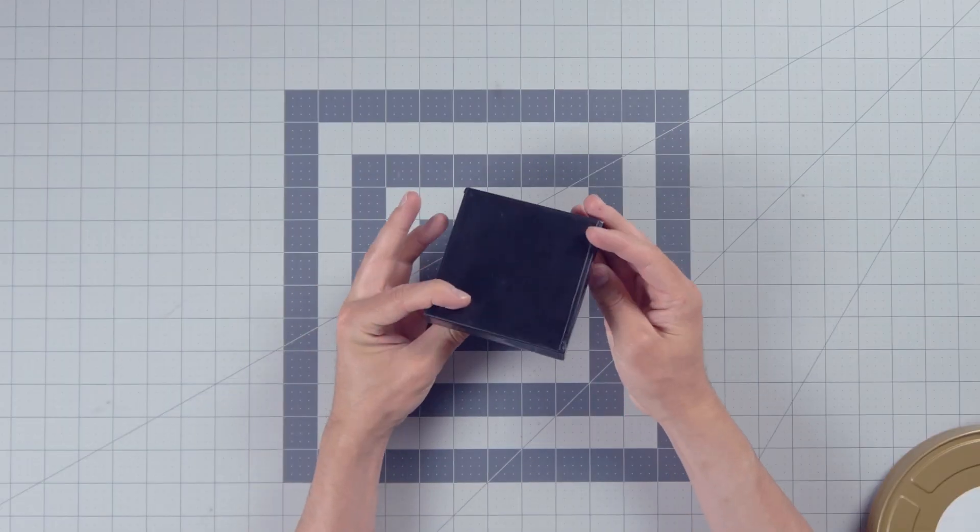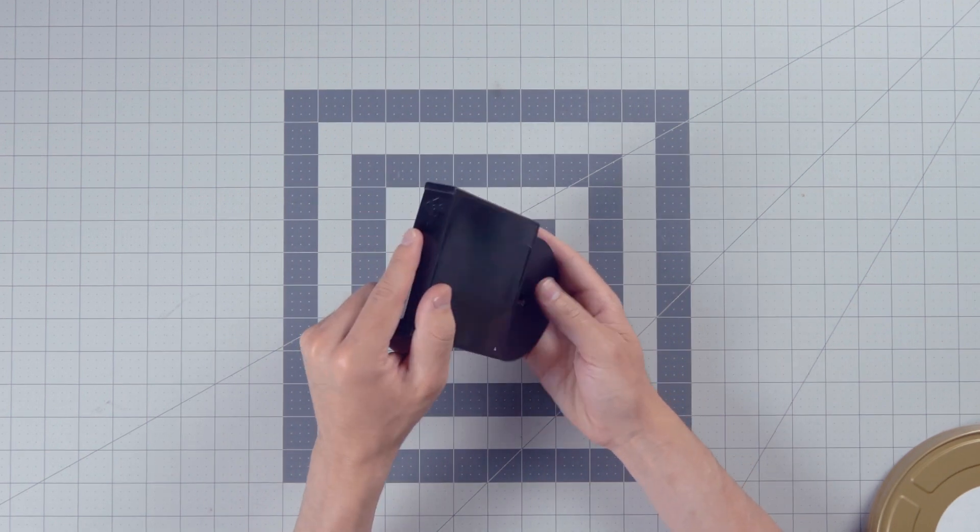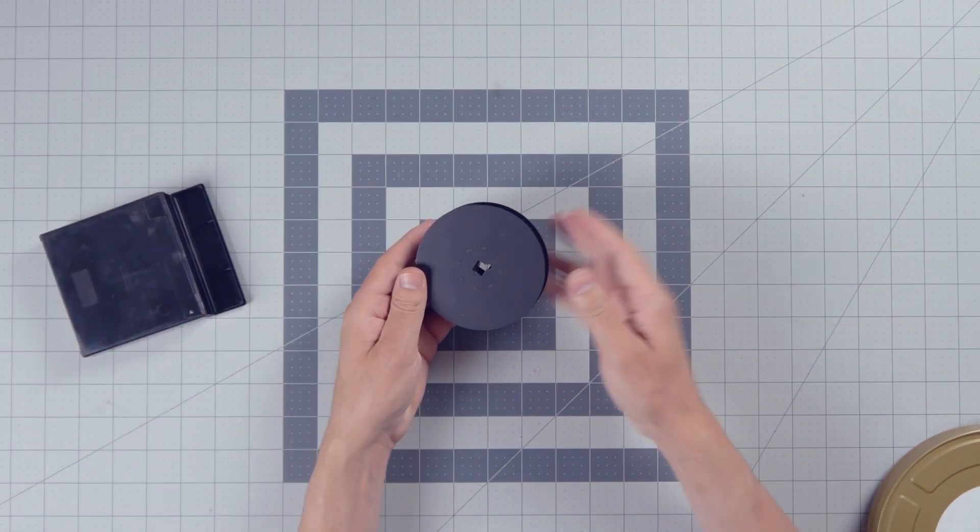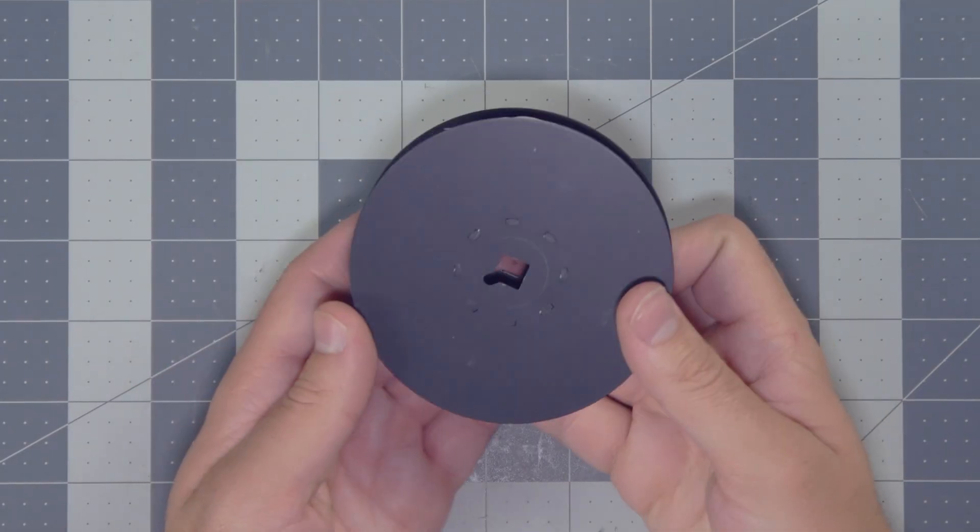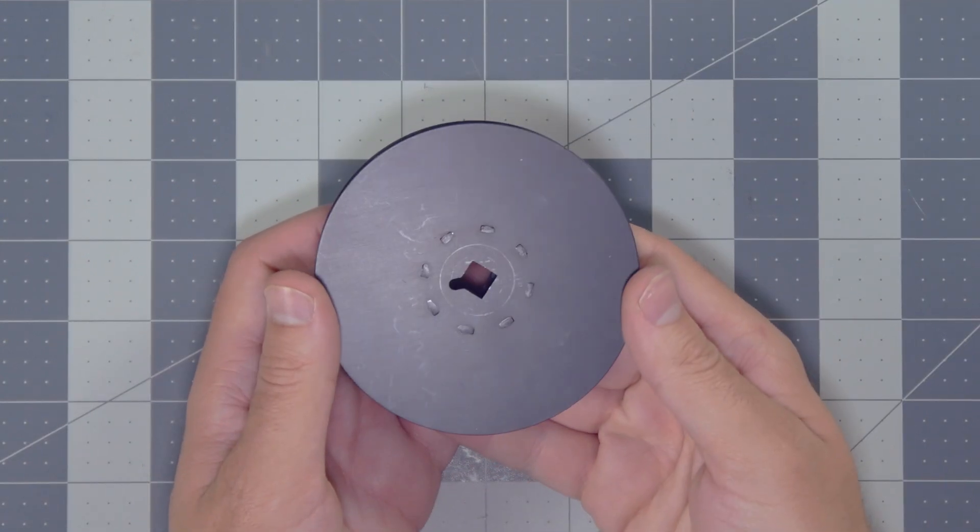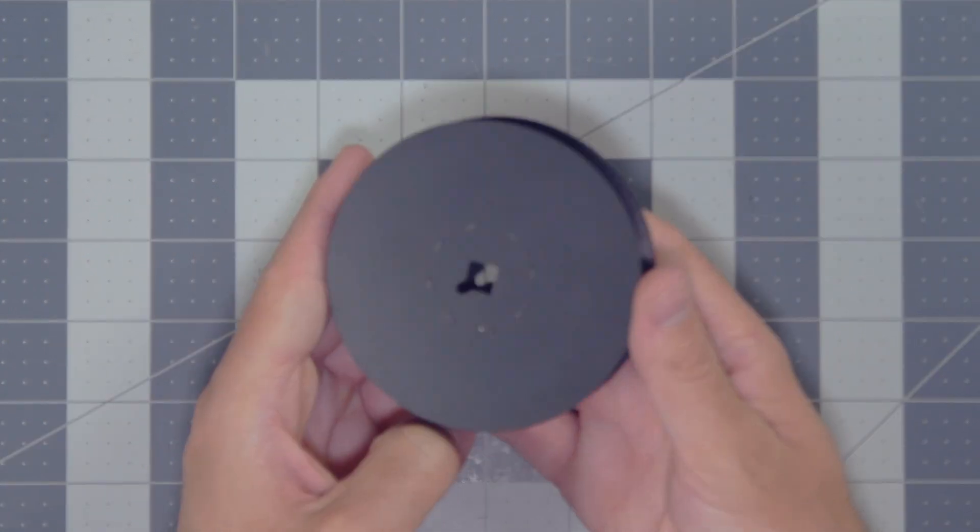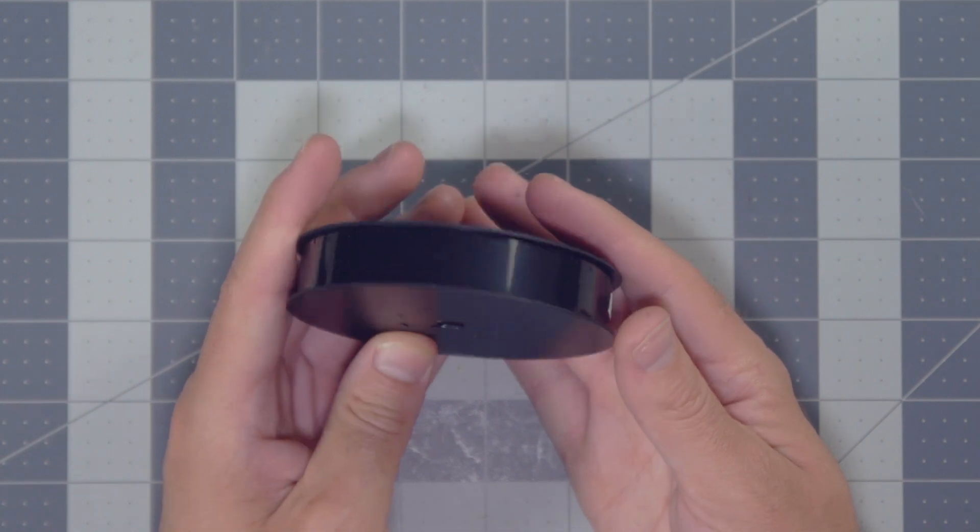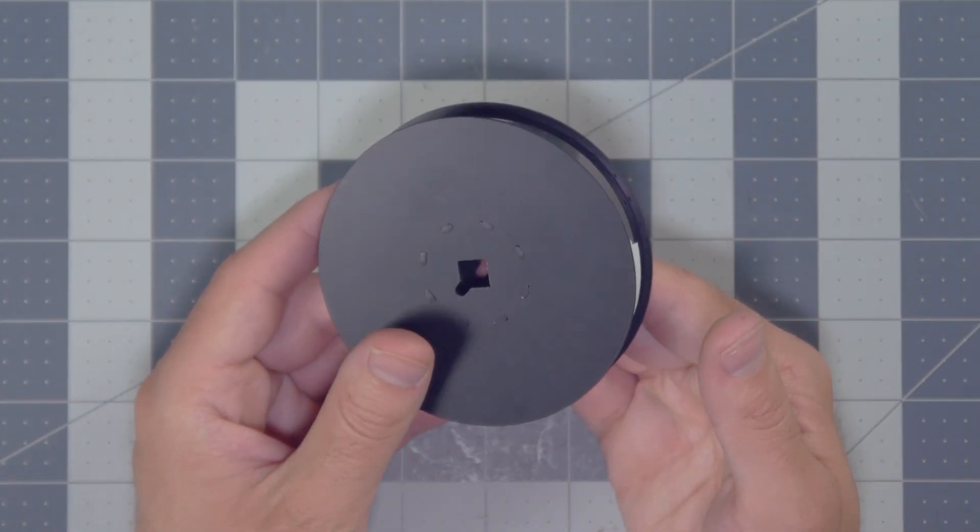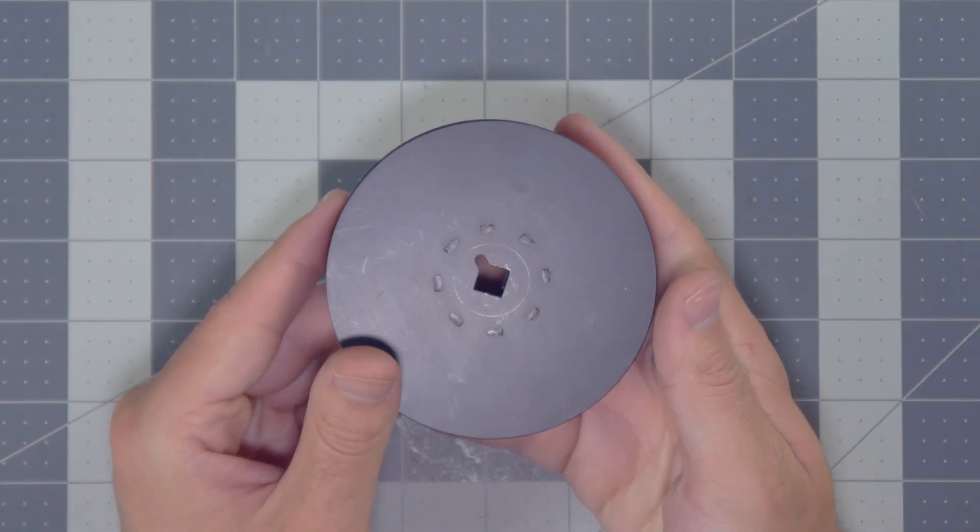100 foot rolls of 16mm are on what's called a daylight spool. It's a metal spool that has the film wound onto it very tightly. This spool is safe to handle outside of a darkroom. Now, I'm not saying stand outside on a super sunny day and just hold it up to the sun. I'm saying that you can handle it in maybe the shade or some subdued light.